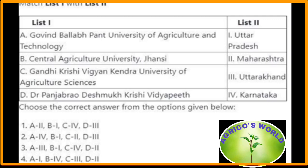Govind Ballabh Pant University of Agriculture and Technology is located in Uttarakhand. Central Agricultural University, Jhansi is located in Uttar Pradesh. Gandhi Krishi Vignana Kendra — University of Agricultural Sciences — is located in Karnataka. Dr. Punjabrao Deshmukh Krishi Vidyapeeth is located in Maharashtra. So here the right option is the third option.